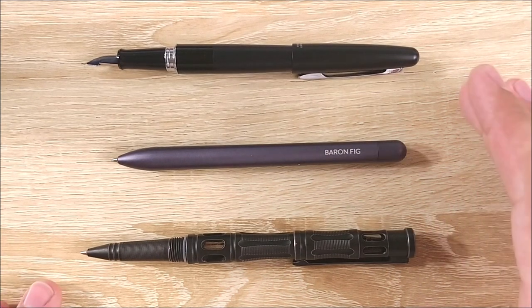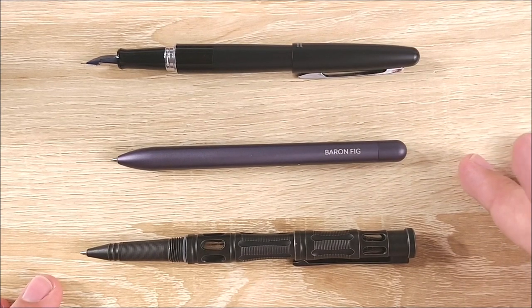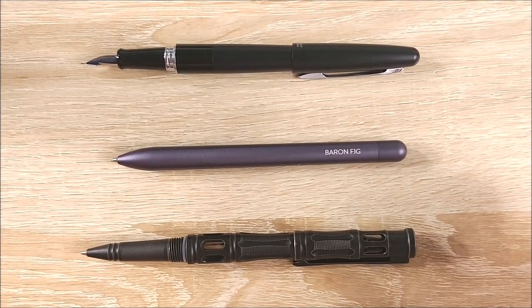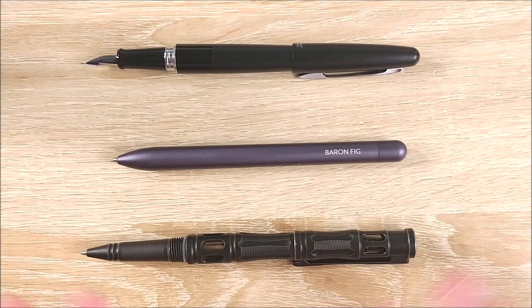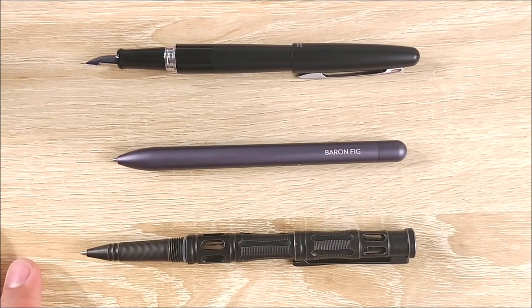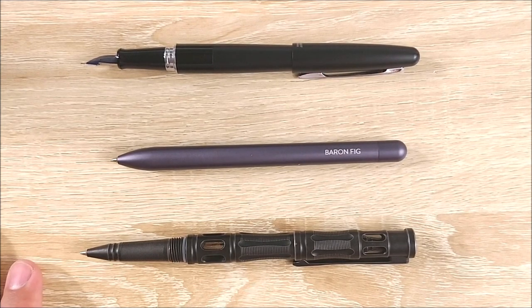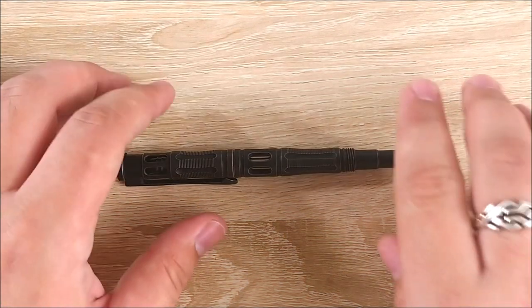With a rollerball, you can grip up as far as you really want to. A little bit larger than the Baron Fig Squire, but not by too much. And here it is posted. It's very close to the Metropolitan size when posted. The two pens overall are pretty similar when it comes to size. Again, dwarfs the Baron Fig. You can't post that pen, but I still really like the size of that one. And to be honest, I really don't post this too much when I use it, just because of how large it gets.